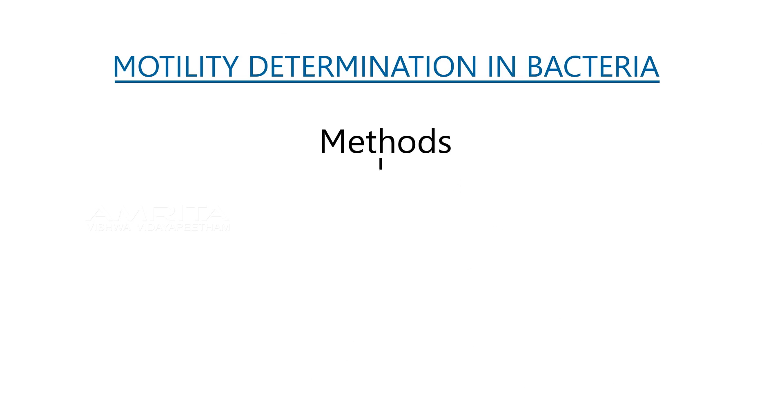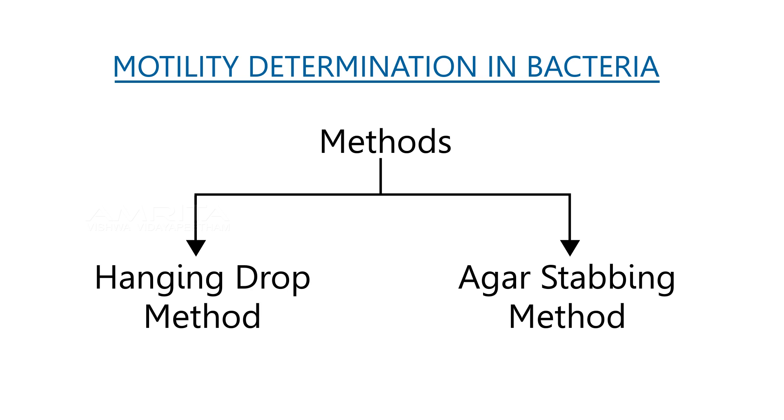There are mainly two methods by which motility determination can be done: the Hanging Drop Method and the Agar Stabbing Method.